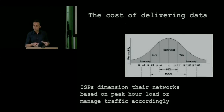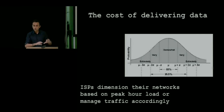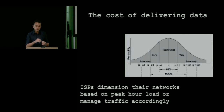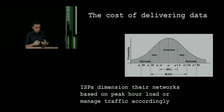I'm going to focus on the scenario where you have data centers around the world each subject to a charging scheme usually based on the 95th percentile. The 95th percentile works as follows: you take the month, divide it into five-minute slots, measure how much traffic goes in each slot, remove the top five percent of the largest peaks, and what remains is the 95th percentile — that's what you get charged for. It's a metric of the congestion created in the network at any given time. ISPs dimension their equipment and networks based on peak-hour load and manage traffic accordingly.